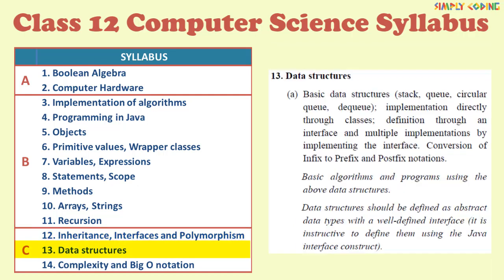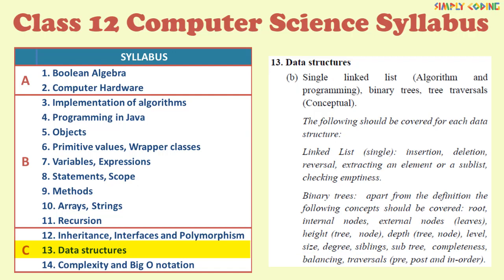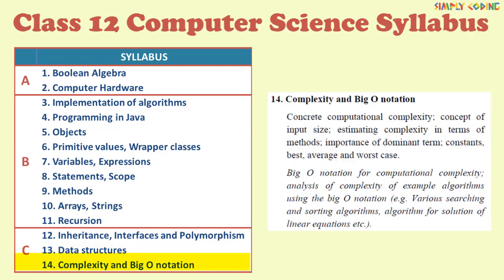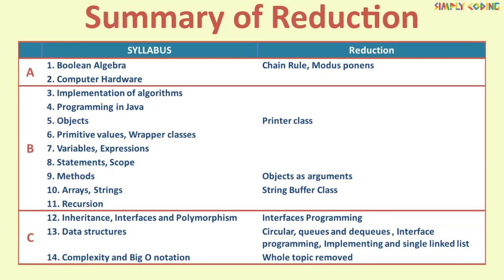Next is data structures. It also has two parts. In part A the circular queue and dequeue has been removed. Also as interface programming is removed, here the definition through an interface and multiple implementation by implementing the interface is also removed. In part B, whole of single linked list section is removed and only the binary tree remains. Next is the last topic complexity and big O notation. This whole topic has been removed. Here is a rough summary of syllabus reduction which covers all subsections.